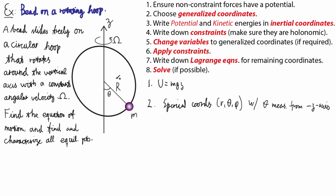I'm not going to write down the kinetic energy and the potential energy with the constraints already applied, because we have a forced constraint here — a rotation constraint that depends on time, as we'll see in a minute. So when I write down the kinetic energy, I'm going to do it in spherical coordinates without trying to impose any constraints.